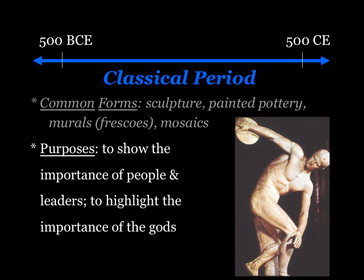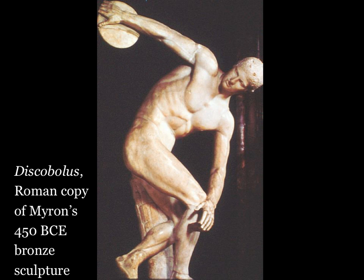Let's look at an example of Classical Art more closely — the sculpture at the bottom right. This particular sculpture, done in marble, is called Discobulus, or Disc Thrower. This is a Roman copy of a Greek original; the original was done in 450 BCE in bronze.